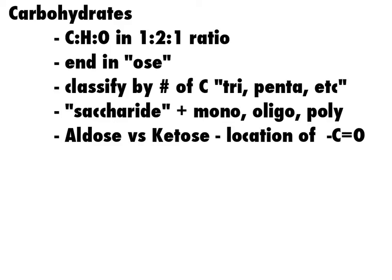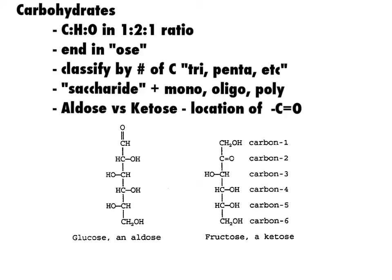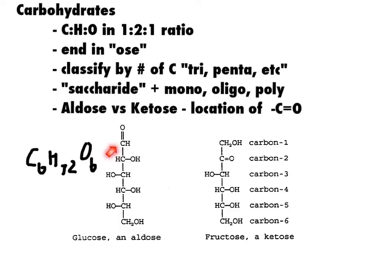The other thing we'll see with sugars is there's always a carbonyl group. That means we'll have aldose and ketose sugars from aldehydes and ketones, based on the location of that carbonyl group. Here we see two carbohydrates, and they've all got the same molecular formula — C6H12O6. Glucose is an aldose because it's got that carbonyl group on the end of its molecule, whereas fructose, which is also C6H12O6, has its carbonyl group in the middle, on carbon 2 instead of carbon 1. That makes it a ketose sugar.